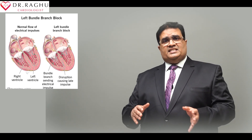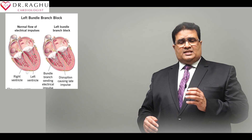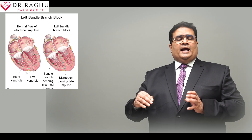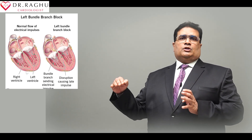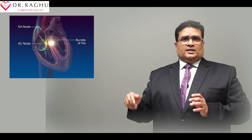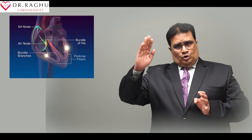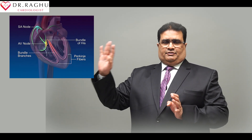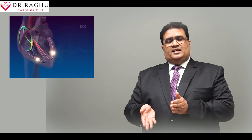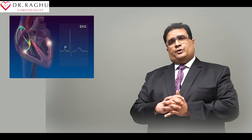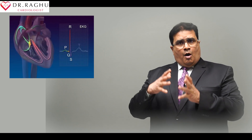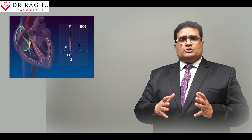In a left bundle branch block, the problem is in the electrical circuit of the heart. The impulses originate normally in the upper chambers and pass through the atrioventricular junction, but cannot travel to the left ventricle initially because there is delayed conduction on the left bundle. So the impulse, instead of traveling to the left first, goes to the right and then to the left. The electrical circuit travels in an opposite direction to normal.